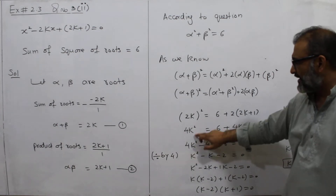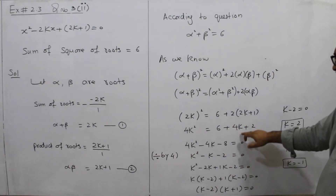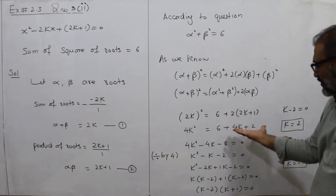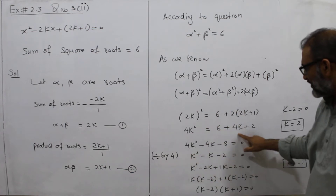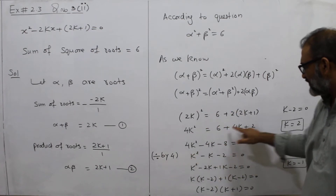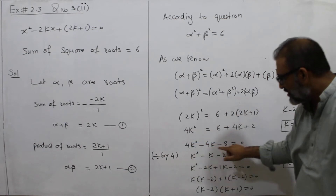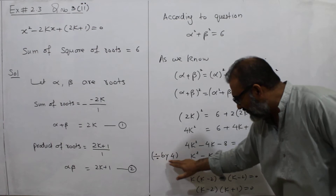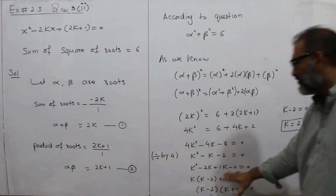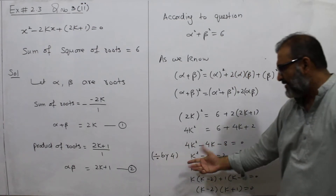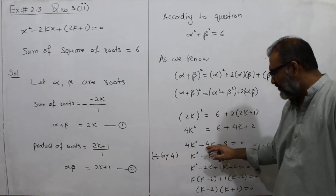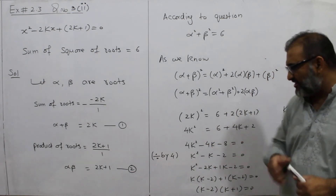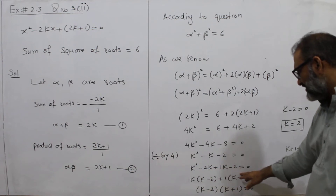This is square 2 and square k. 6 and 2 is 4, and 4 minus 2 is 2. Then I have all shifted here. This is plus 4k, it is minus 4k. And 6 plus 2 is 8, so this is minus 8. If you divide by 4, then we can solve it. I have done it easily — 4 cancels, 4 cancels, 4 cancels. Here is 2. Now this is middle term break — factorization is done.